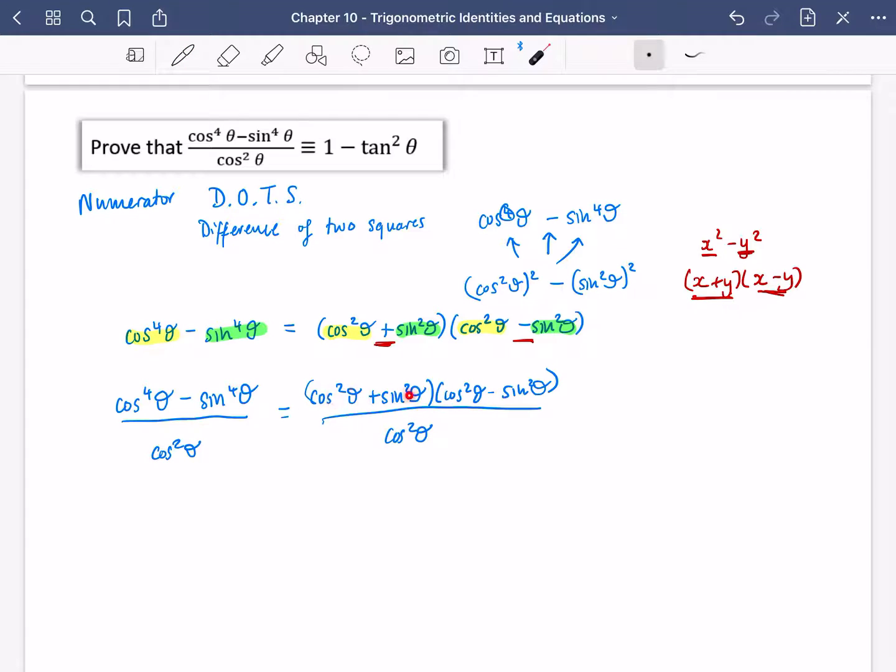Hopefully you recognize that this thing here, sin squared plus cos squared, either way around, is just equal to 1. So because it's equal to 1, it's almost like it's not there because you're just multiplying by 1, which keeps everything the same. So I get cos squared theta minus sin squared theta all over cos squared theta.